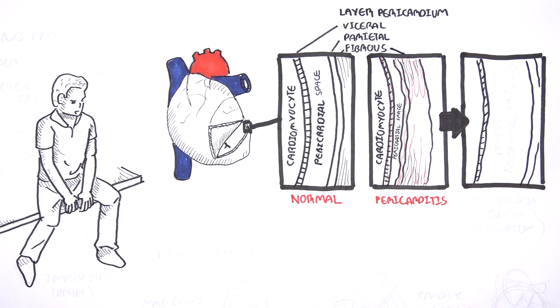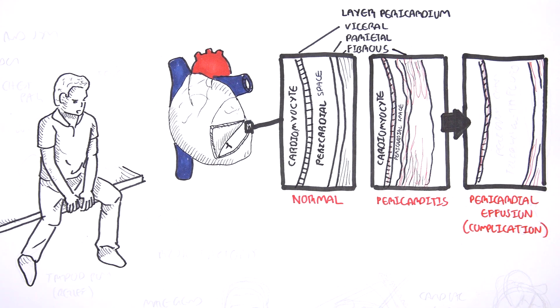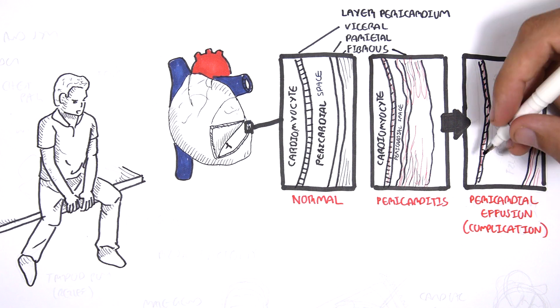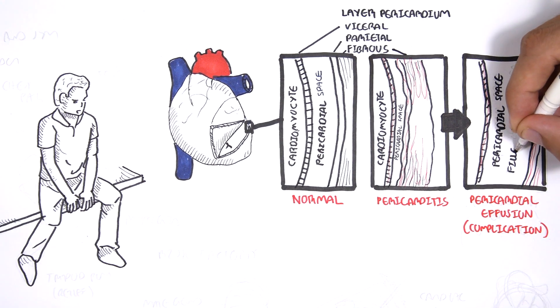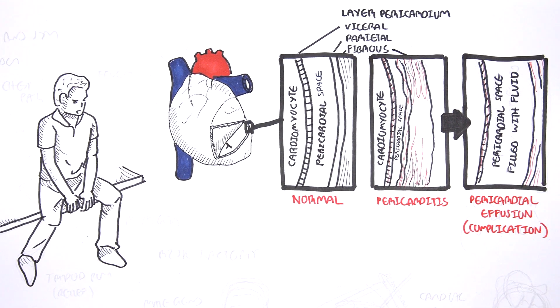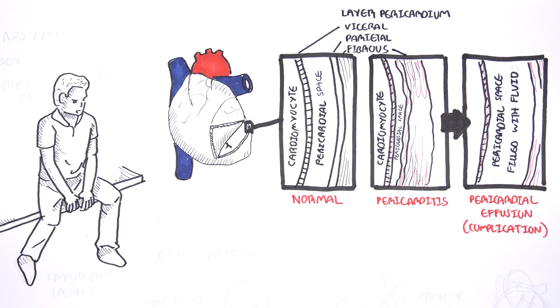If pericarditis persists and is not treated, pericarditis can lead to pericardial effusion, which is a complication. Pericardial effusion is when the pericardial space is filled with extra fluid. The extra fluid exerts pressure on the heart muscles, resulting in cardiac dysfunction.